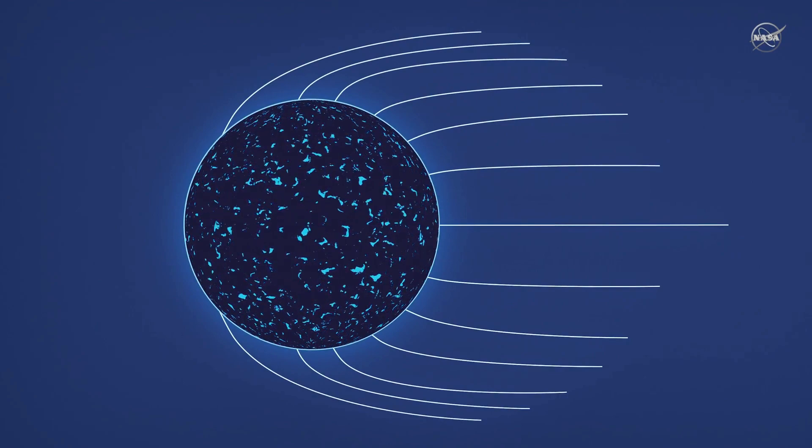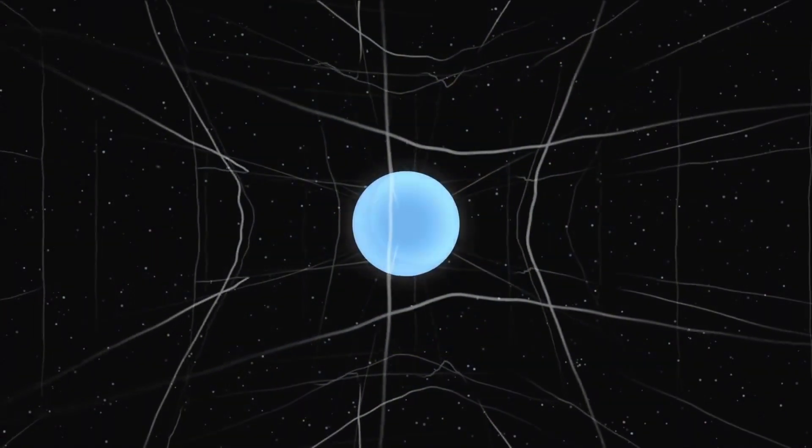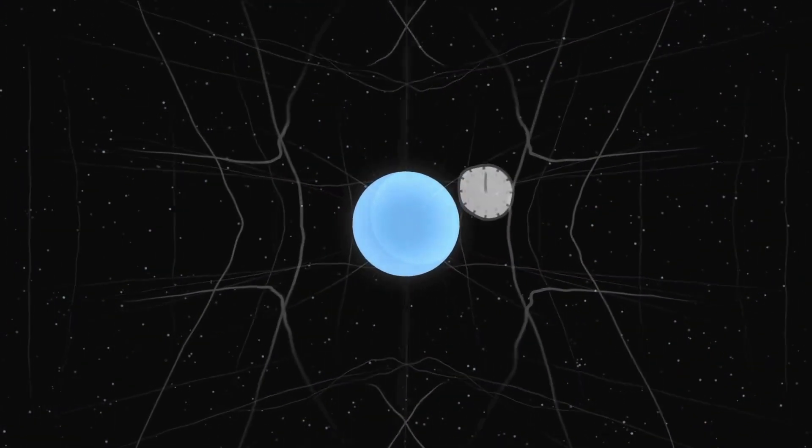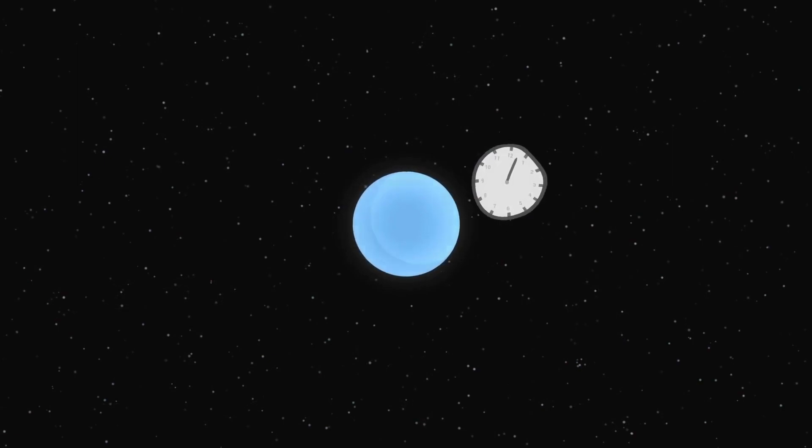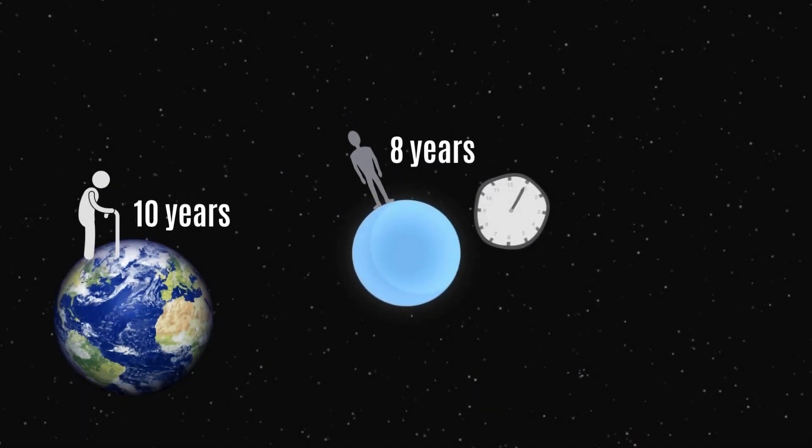The entire surface of a neutron star can be visible from a single vantage point. Time passes much slower on neutron stars due to their enormous gravity. In fact, spending eight years on a neutron star is equivalent to experiencing ten years on Earth.